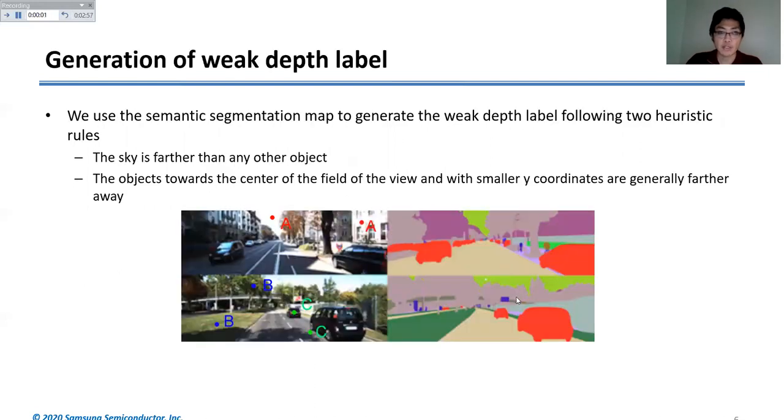When we generate these pixel or patch pairs, we generate them from the semantic map to make it weakly supervised. For example, sky should always be farther than cars or trees. We can get one patch from sky and another patch from a tree, and then check whether this relative depth relationship is preserved in our estimated depth map.